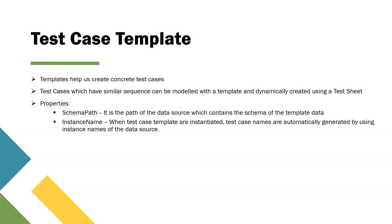There are two properties in test case template. One is the schema path, which is basically the path of the data source that contains the schema of the template data. This data source could either be the test design sheet or you can also use an Excel sheet.